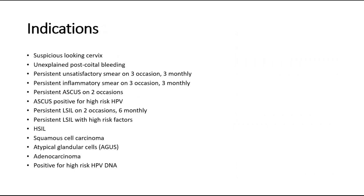This is the list of indications to do colposcopy, which includes a suspicious looking cervix, or if there is unexplained post-coital bleeding — that is, bleeding after sexual intercourse. Also a persistent unsatisfactory smear or inflammatory smear on three occasions, three monthly.